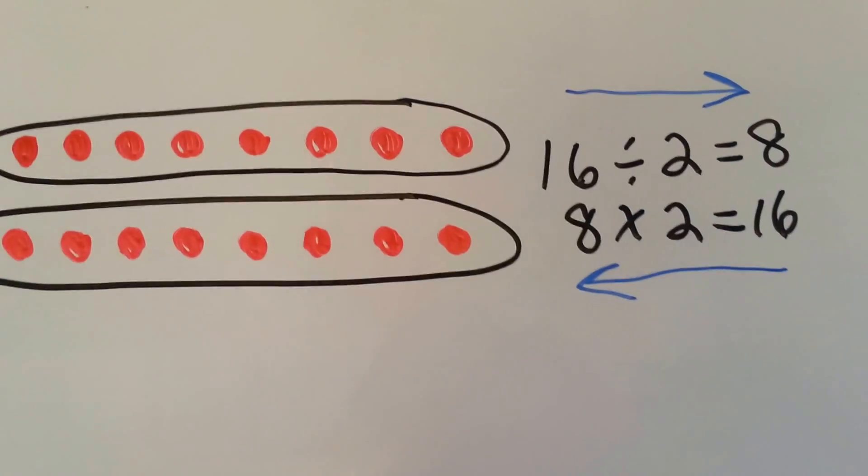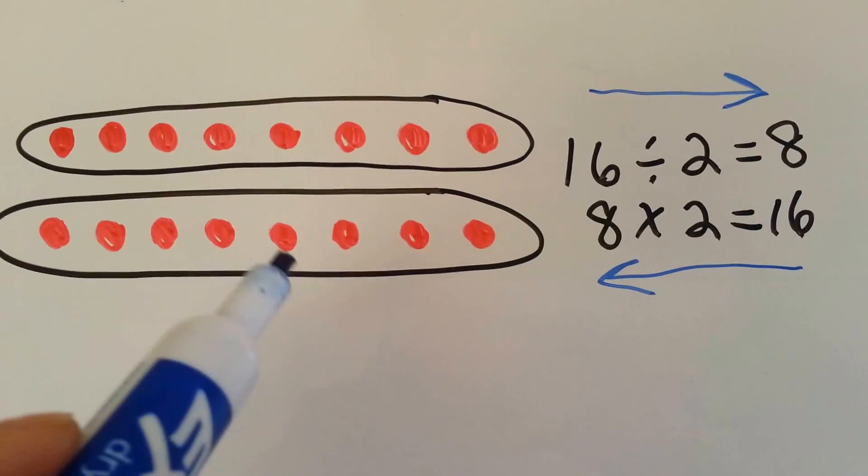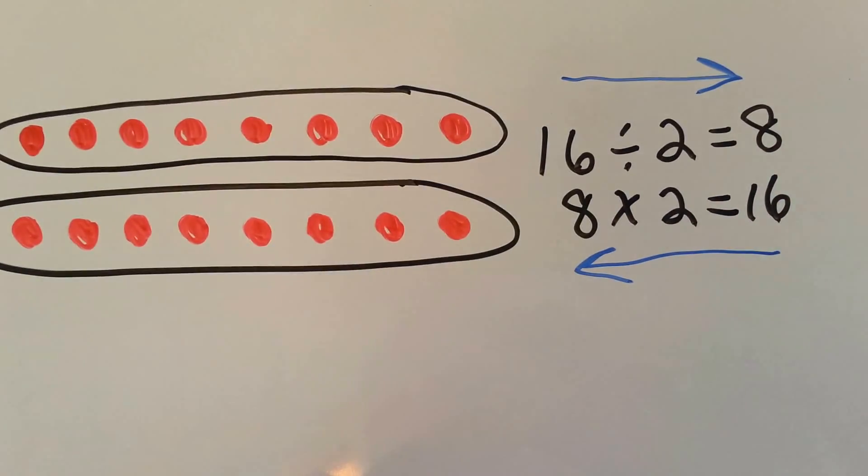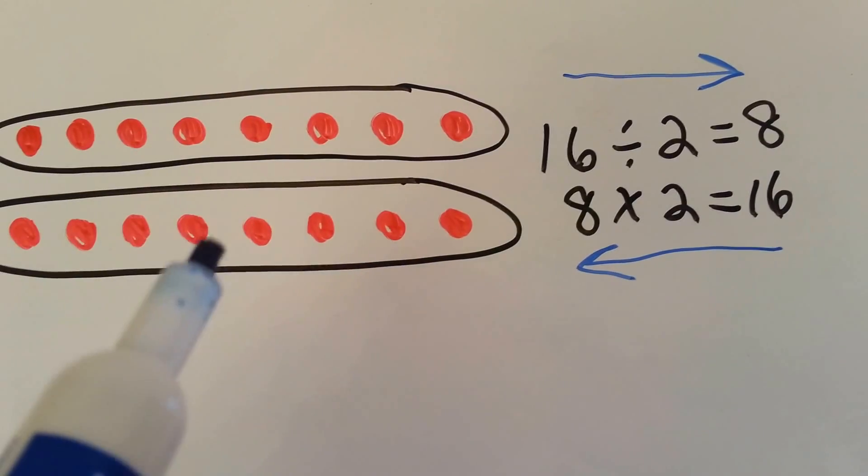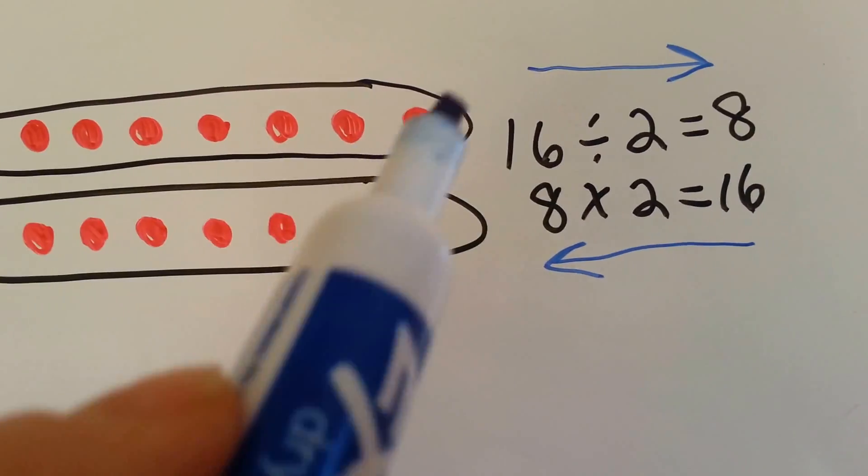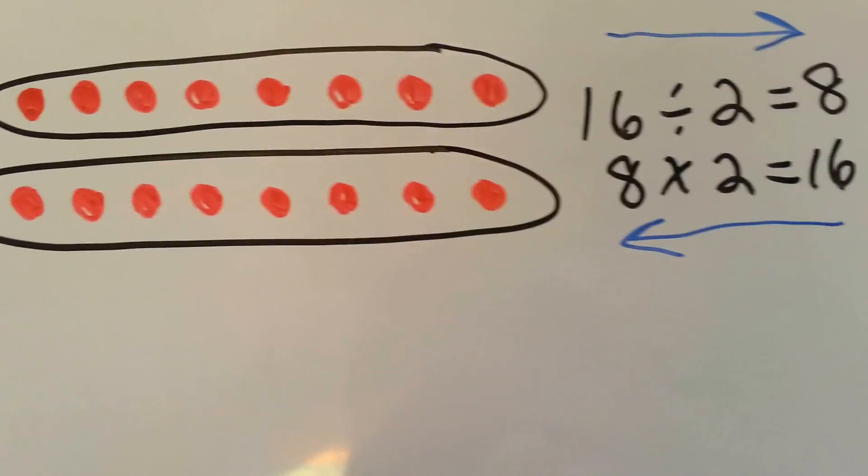Same with this one. We have 16 dots, and we divided it into 2 groups with 8 in each group. 16 divided by 2 equals 8. We could also say that we have 8 here and 8 here, so we have 8 two times, and 8 times 2 is 16.